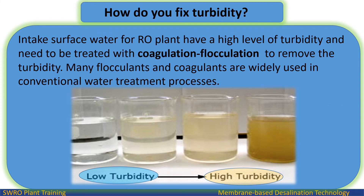How do you fix turbidity? Intake surface water for an RO plant can have a high level of turbidity and needs to be treated with coagulation and flocculation to remove the turbidity. Many flocculants and coagulants are widely used in conventional water treatment processes.